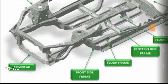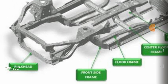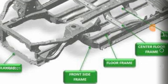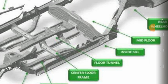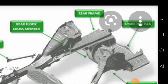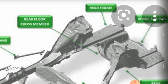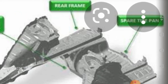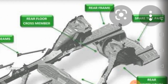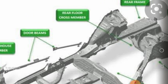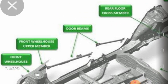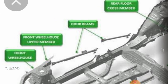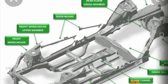The parts include: bulkhead, infrared center frame, floor frame, A-frame, center floor frame, floor tunnel, inside sill, mid floor, rear wheelhouse, spare tire pan, rear frame, rear floor cross members, door beams where doors are fixed, and front wheel house upper member.